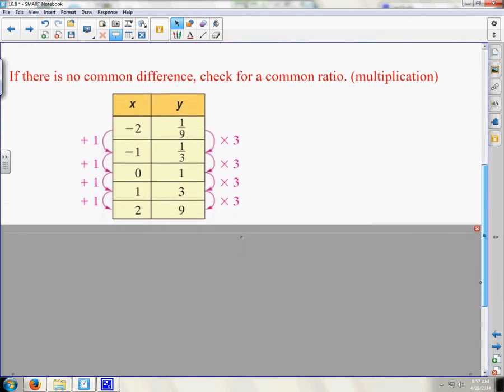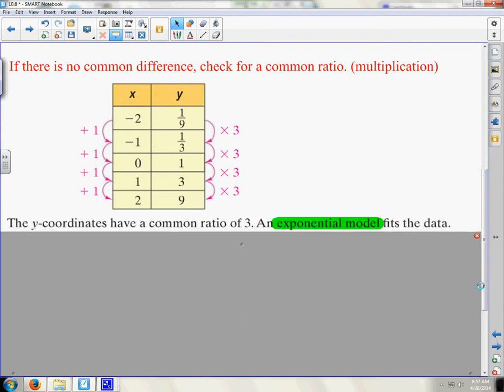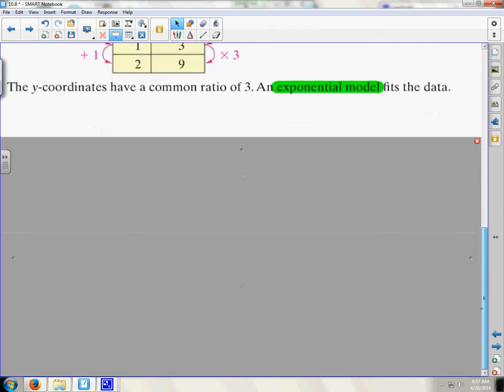Now, this one, if there's no common difference, so it's being multiplied by three. If you remember this, this is an exponential model. If it's being times by the same amount each time, it has a common ratio of three. That is an exponential model.